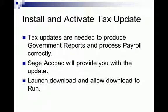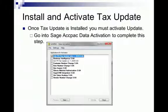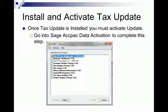You'll need to install and activate the tax update. Tax updates are needed to produce government reports and process payroll correctly. SAGE ACPAC will provide you with this update — it will be a link which you will launch to download and allow that download to run. Once you have installed the update, you'll need to activate the update in Data Activation.